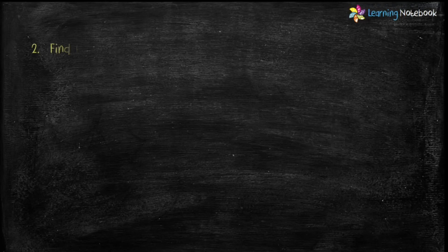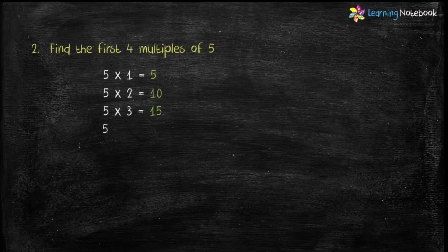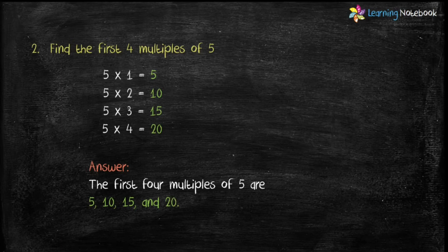Question two: find the first four multiples of five. To find the first four multiples of five, multiply five by 1, 2, 3, and 4. So the answer is the first four multiples of five are 5, 10, 15, and 20. In this way you can find the multiples of any number as per the question.